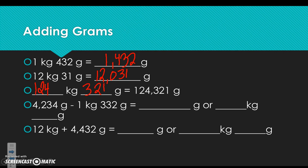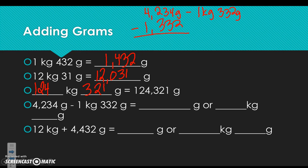Subtracting: 4,234 grams minus 1 kilogram 332 grams. Convert 1 kilogram 332 grams to 1,332 grams. 4 from 2: wait — subtract: 4 from 2 is 2, 3 from 3 is 0, can't subtract 3 from 2 so regroup: 3 from 12 is 9. Result: 2,902 grams, or 2 kilograms 902 grams.